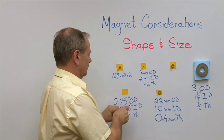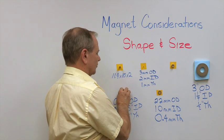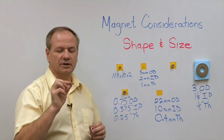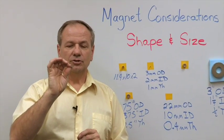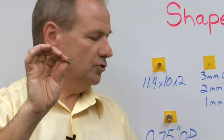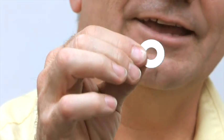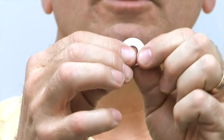Now we're going to take a look at one that has had some really popular uses because of how super thin it is. This particular magnet is 22 millimeters OD, 10 millimeters ID, and 0.4 millimeters thick.